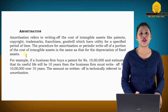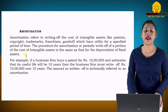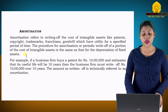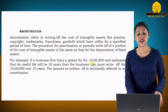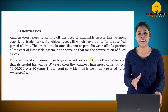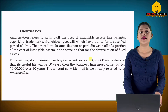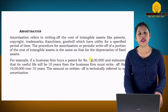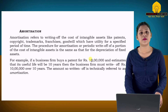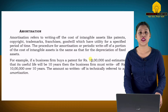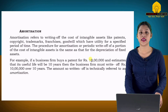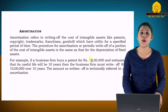So for fixed assets we use depreciation, and for intangible assets we use amortization. For example, if you had a patent worth Rs. 10,000 with a life of 10 years, then we write off Rs. 1,000 per year as amortization of that intangible asset.